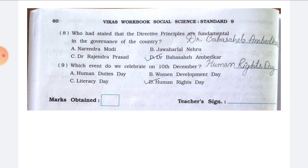Number eight, who had stated that directive principles are fundamental in the governance of the country — the answer is option D, Dr. Babasaheb Ambedkar. Number nine, which event do we celebrate on 10th December — the answer is option D, Human Rights Day. This was the solution of Section A of chapter number nine. If you have any doubt, query or suggestion, let me know in the comment section. I'll see you in the next part. Till then, bye bye, take care.